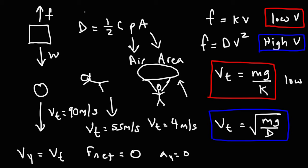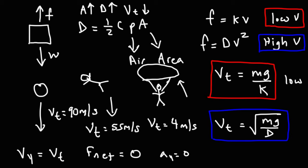When you increase the area of a falling object, the proportionality constant D increases. We can't change the density of air or the drag coefficient significantly, but we can change the area. If we increase the area using a parachute, D increases. Since D is in the denominator of the fraction, increasing it decreases the terminal velocity. So the one thing you can do to decrease terminal velocity is to increase the area of the object, as in the case of employing a parachute.